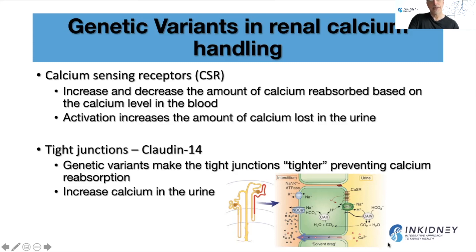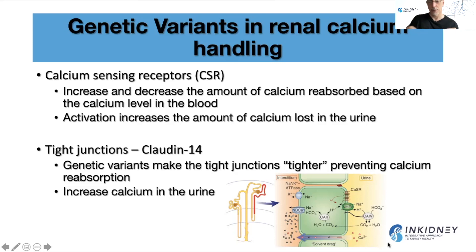A lot of calcium can also be reabsorbed in between the cells — we call that the paracellular pathway. The cells of the tubules are connected with each other with something called tight junctions, which prevent leakage between cells. There is a protein called claudin-14 that is essential for the formation of those tight junctions. Genetic variations in claudin-14 make those tight junctions tighter, which prevents calcium from being reabsorbed into the blood, increasing calcium in the urine and raising the risk for kidney stones. So two things about calcium — calcium sensing receptors and claudin-14 — can lead to calcium stones.